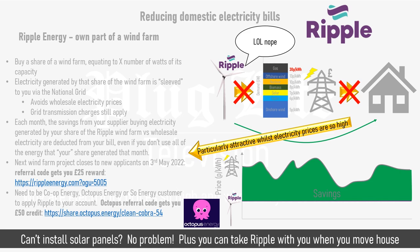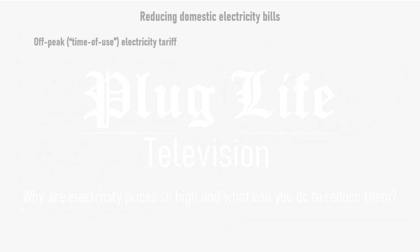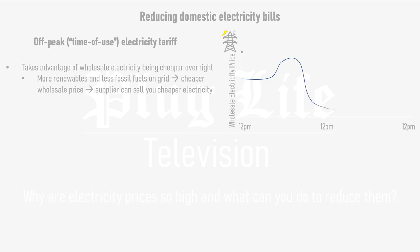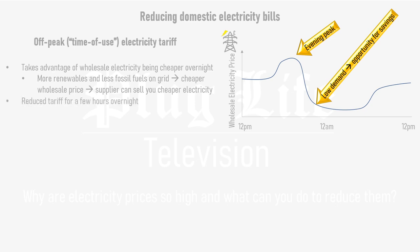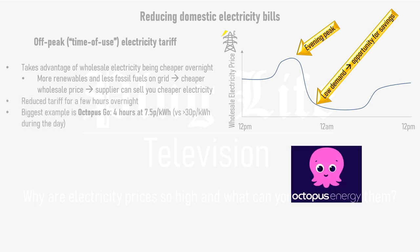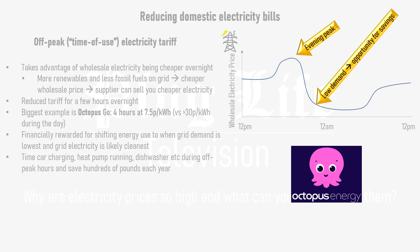If you don't have the cash up front for a wind farm investment, you can still save money by switching to an off-peak, time-of-use electricity tariff. This takes advantage of wholesale electricity being cheaper overnight than during the day. Since there's less demand, more renewables and less fossil fuels on the grid, electricity is typically much cheaper at night, meaning your supplier can sell you cheaper electricity at certain hours. The biggest example is Octopus Go, which at the time of making this episode provides four hours of electricity at 7.5 pence per kilowatt hour overnight, versus over 30 pence per kilowatt hour during the day. This is perfect for charging your car, running your heat pump to heat up the hot water tank, running the dishwasher and so on.